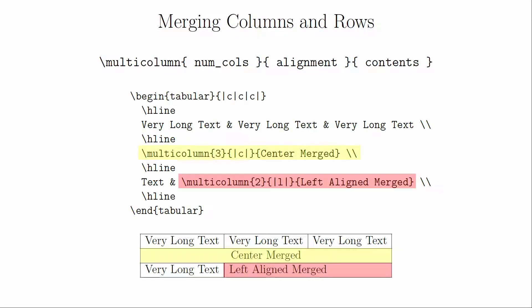One last trick for both tables and arrays is merging columns and rows together. For columns, there's a command called multicolumn that accomplishes this. Here's an example to demonstrate how it's used. The first brackets are used to indicate the number of columns being merged. The second brackets are used to define the alignment of the new column and any vertical lines you want to have around it. And the last brackets are used for the actual contents of the cell.